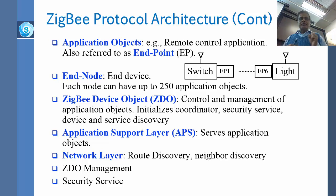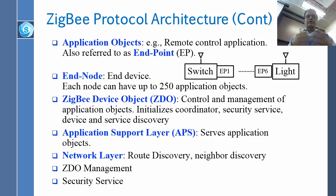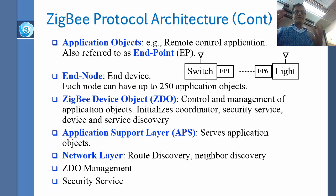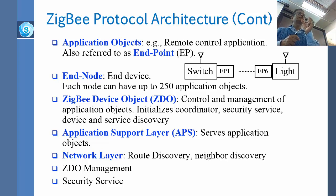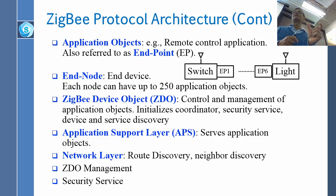Application objects is like a remote control application. The name for them is also called endpoints. Endpoint is another name for profile or application objects. End node is a device. There is a difference between the function and the node: endpoint is a function, end node is a device. In a device you can have five, six, or as many functions as you want. That is the difference between the node and the endpoint.